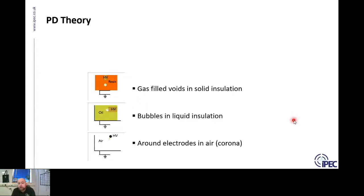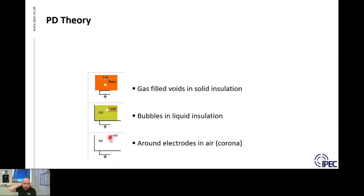It could also occur in oil or compound insulation where bubbles form, or around an electrode in air — such as at a cable termination. It is not surface tracking, and on a bushing or outside connection it can also be known as corona, which is less concerning.